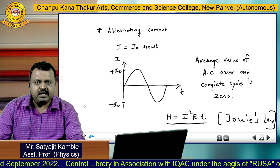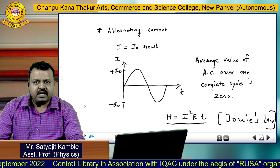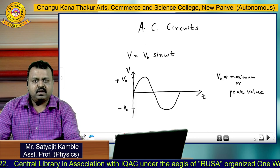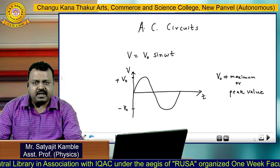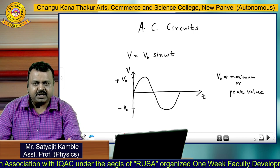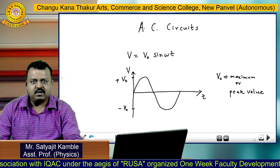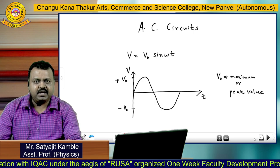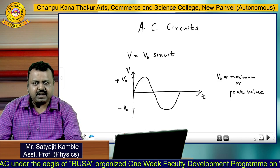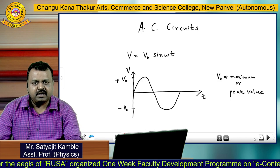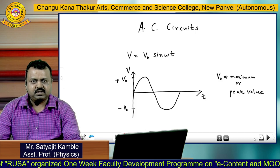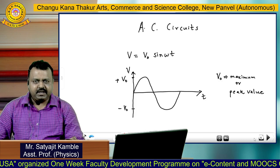Today we are going to study alternating current circuits. In an alternating current circuit, most probably we are going to use alternating voltage. As you know, in India whatever electricity we are generating, it is in the form of alternating current, it is in the form of alternating voltage.